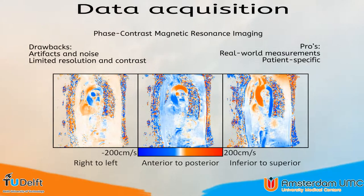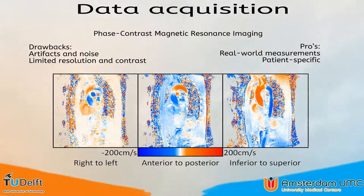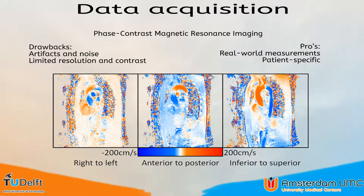Another approach is to measure the data, for example using phase contrast MRI. By definition, this data is patient-specific. However, it suffers from artifacts and noise and has a limited resolution and contrast. Typically, the data has a spatial resolution of 1 to 3 millimeters and a temporal resolution of 20 to 50 milliseconds. This is a coarse resolution given that the blood flow in a healthy individual can reach speeds up to 200 centimeters per second.